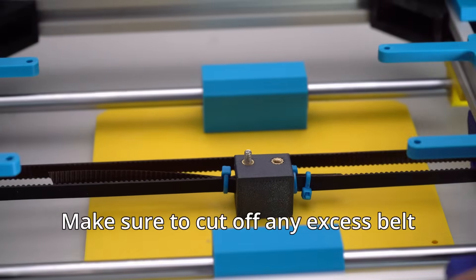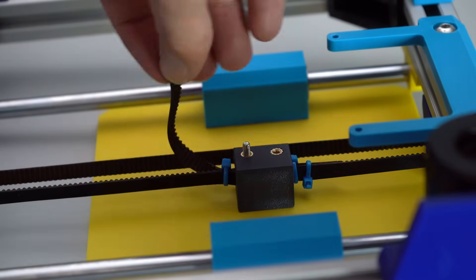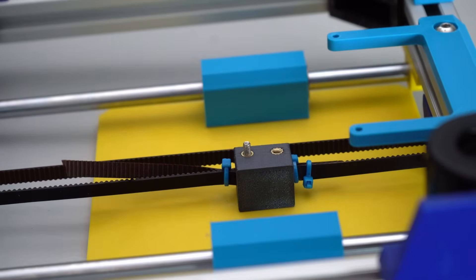With everything run, the final belt setup looks like this, and you should be able to feel quite a bit of resistance when moving the bed now. If everything looks good, we can move on to the next step.